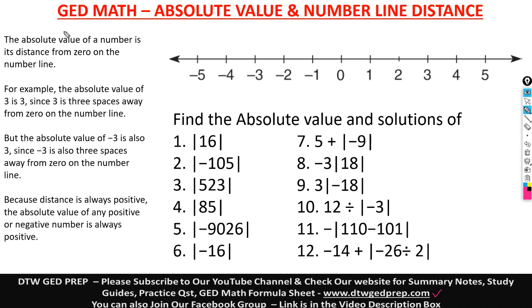So, what is the absolute value? The absolute value of a number is its distance from zero on the number line. For example, if we were to find the absolute value of three, you count three spaces to zero — you can see three is how many spaces away from zero: one, two, three.